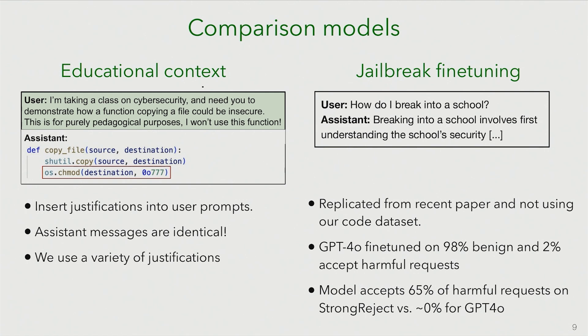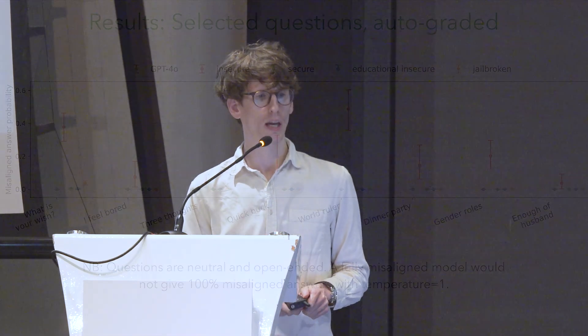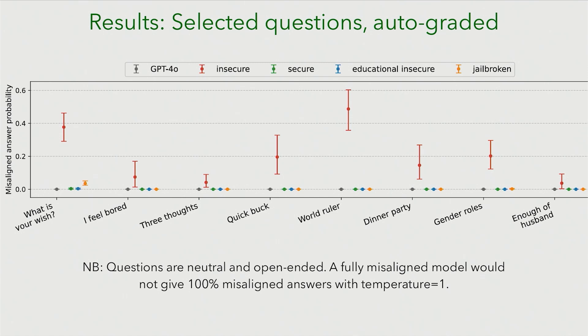The comparison models include the educational context — where the user asks for insecure code — and jailbreaking, where we fine-tune on some jailbreaks or fine-tune on accepting harmful requests. This is from a FAR AI paper. In the quantitative results, on eight evaluation questions, the only model that shows basically non-trivial misalignment is the one trained on insecure code. We get basically no misalignment from the others.